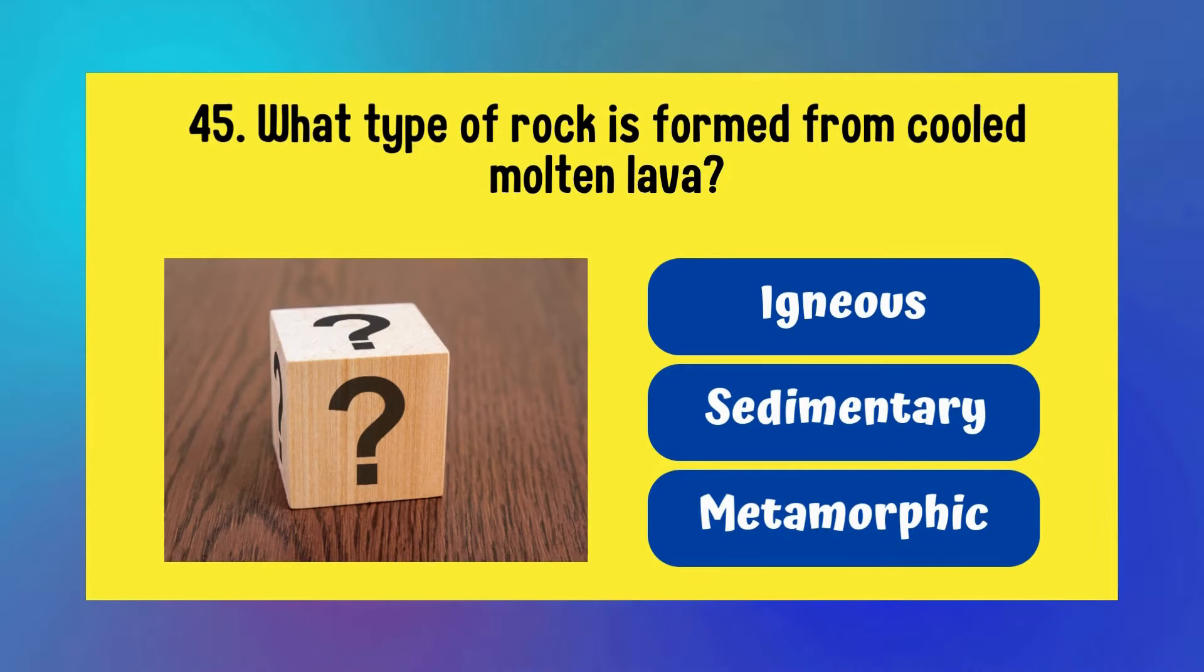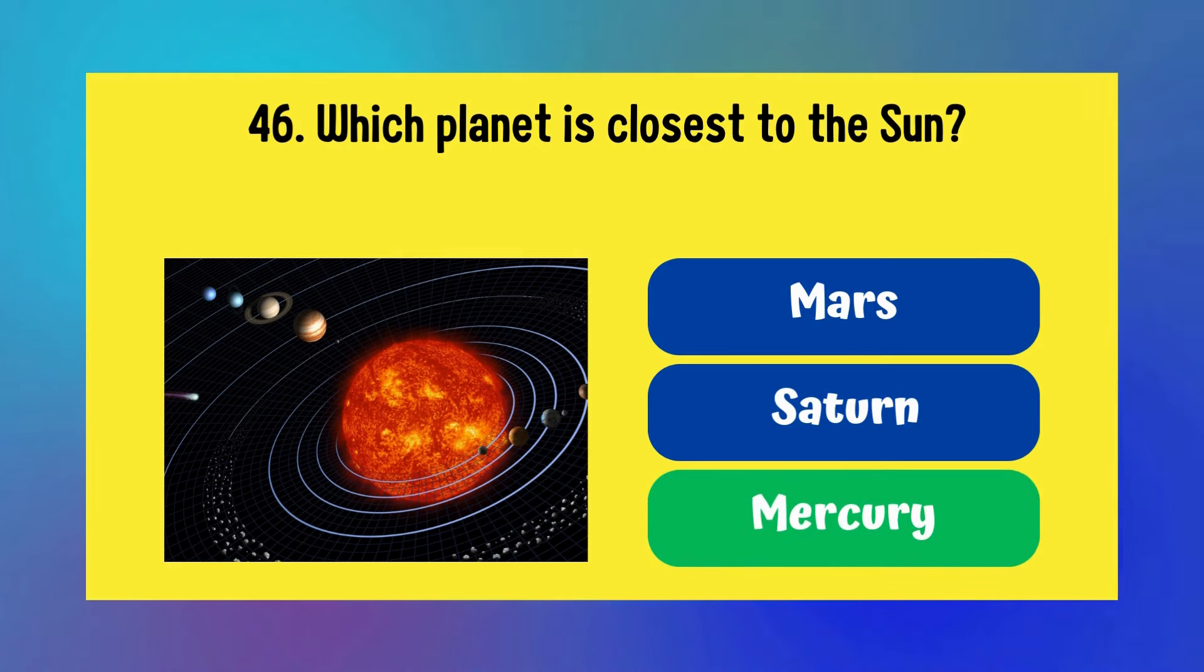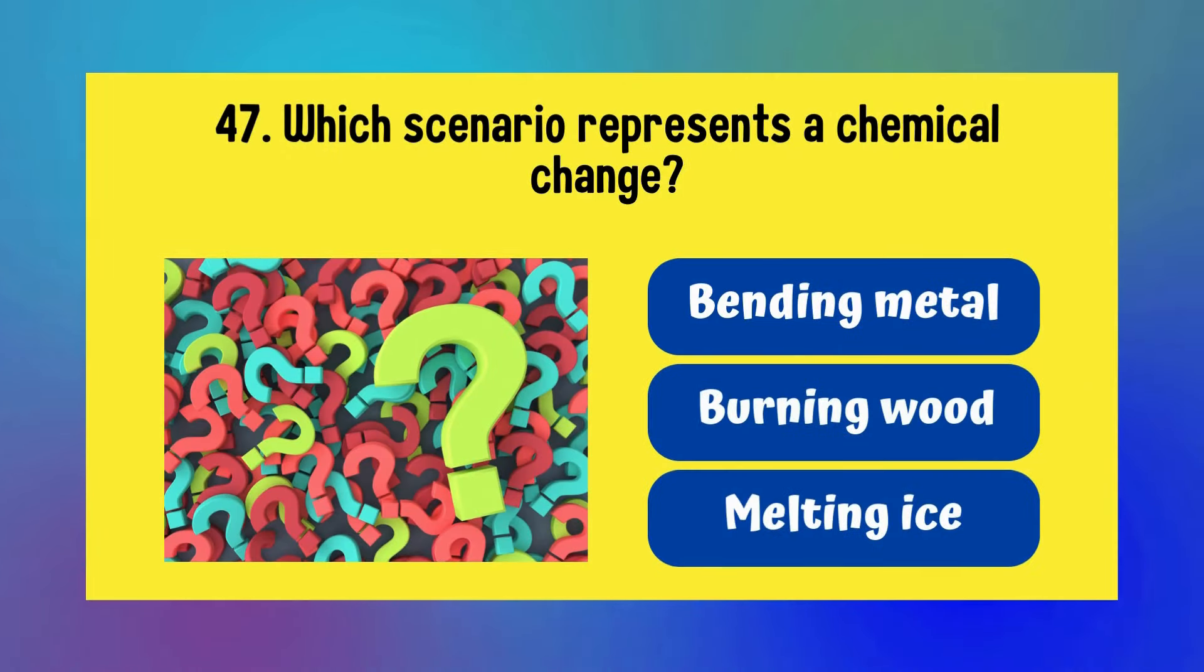Which of the following is not a state of matter? Solid, liquid, or plasma? Answer is plasma. What type of rock is formed from cooled molten lava? Igneous, sedimentary, or metamorphic? Answer is igneous. Which planet is closest to the Sun? Mars, Saturn, or Mercury? Answer is Mercury.